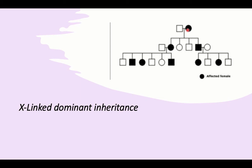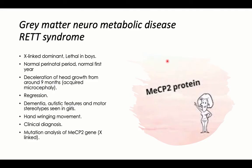Characteristically, a female can transmit the disease to her daughter and her son since she gives both X chromosomes, while a male cannot transmit the disease to his son as it is X-linked, not Y-linked.